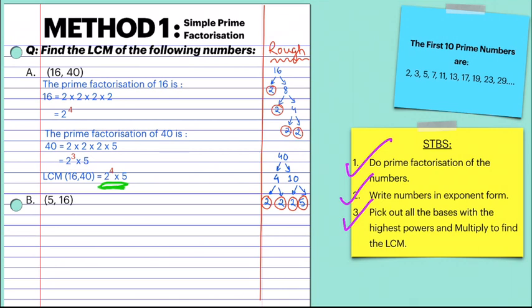2 to the power 4 means multiply 2 four times: 2 into 2 into 2 into 2, and then multiply by 5. The final answer, the LCM of 16 and 40, is 80.